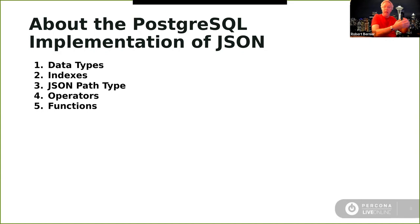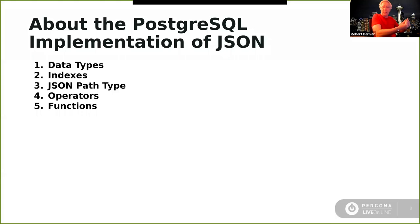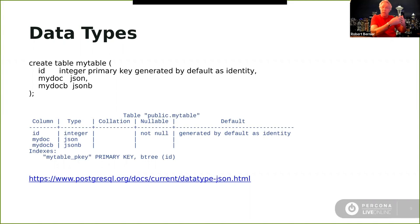Postgres has implemented JSON incrementally over the years and at this point it is quite mature. There are five essential parts: data types, indexes — to accelerate queries across large data sets — the JSON path type, which is fully implemented and closely watched by the community, and operators and functions, which are one of the greatest strengths of Postgres.